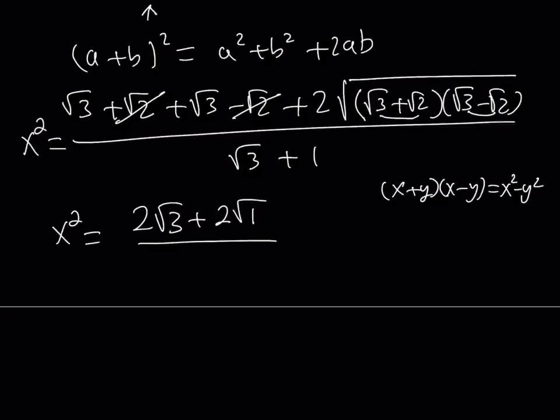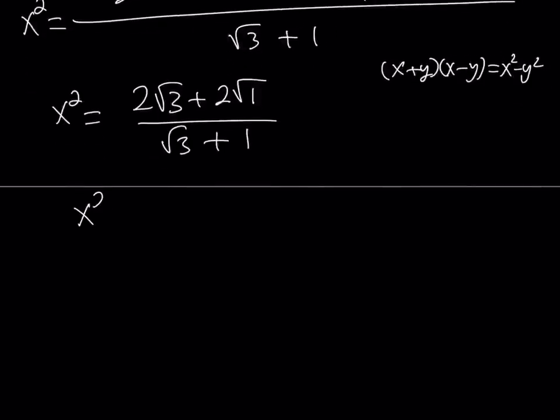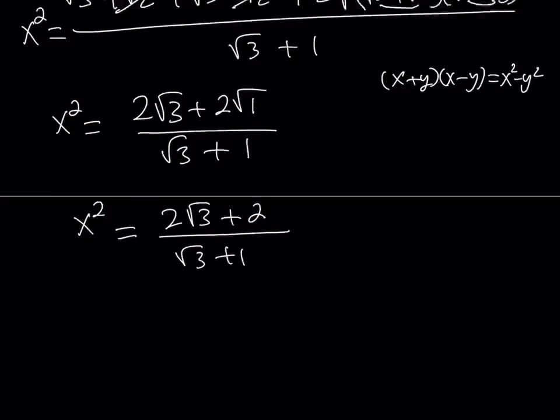So I can write it as the square root of 1, and then divide it by that. And obviously, this simplifies, because 2 times the square root of 1 is just 2. So I can write the x squared as 2 root 3 plus 2 divided by root 3 plus 1.